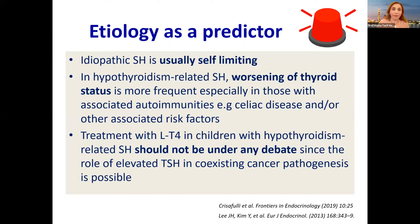In hypothyroid-related subclinical hypothyroidism, worsening of thyroid status is more frequent, especially if there is associated autoimmune disease like celiac or other risk factors. Treatment with LT4 in children with hypothyroid-associated subclinical hypothyroidism should not be under any debate, especially if above 10 — because some references discuss the role of elevated TSH in coexisting cancer pathogenesis on the long run.